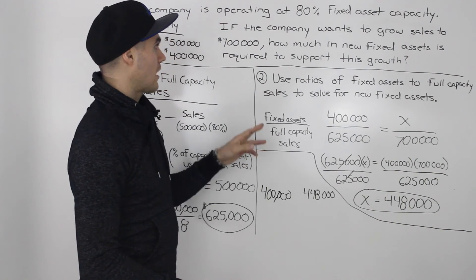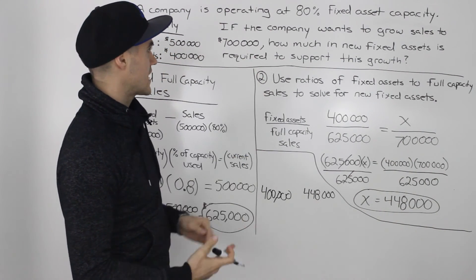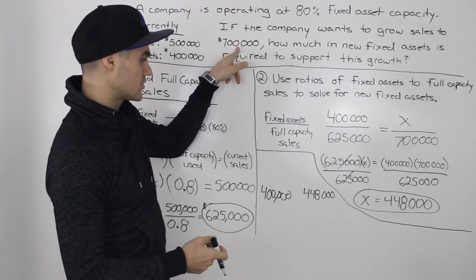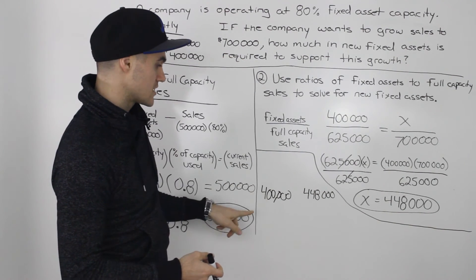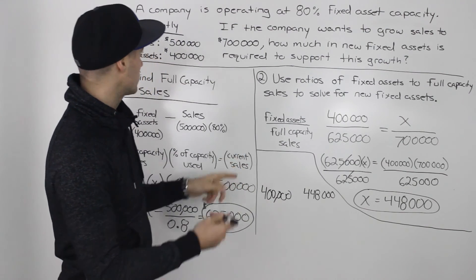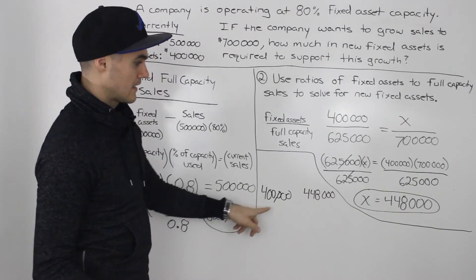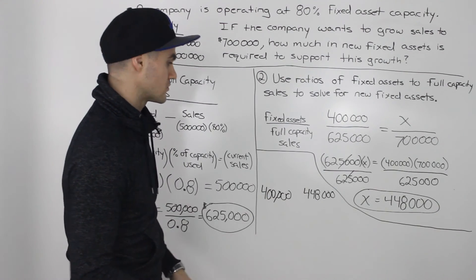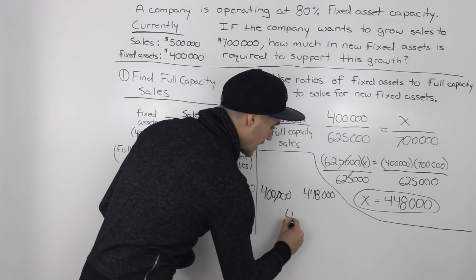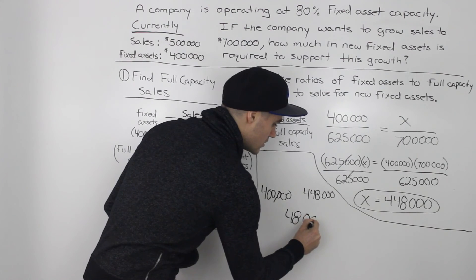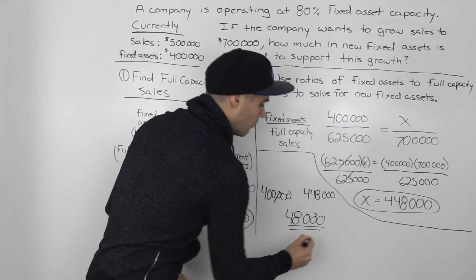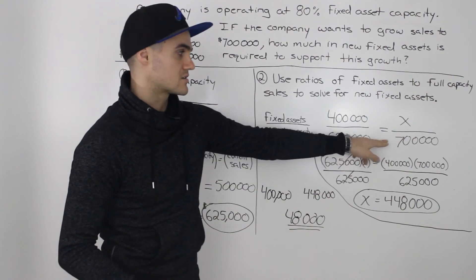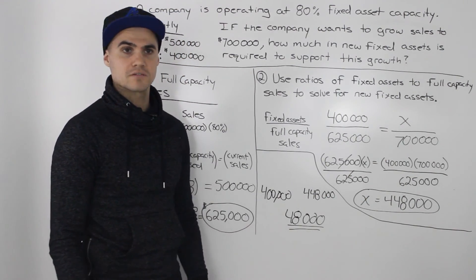To finally answer the question: how much new fixed assets is required to support the growth to $700,000 worth of sales? We started with $400,000 worth of assets and we need $448,000 to support that growth. So we need $48,000 more in new fixed assets to support sales of $700,000.